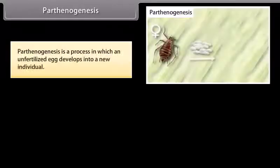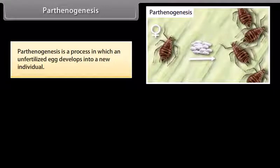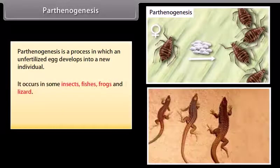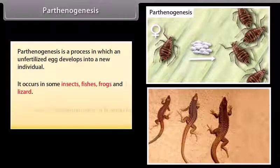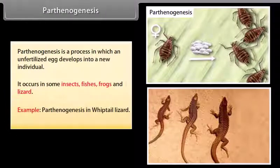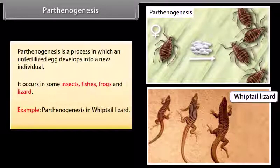Parthenogenesis is a process in which an unfertilized egg develops into a new individual. It occurs in some insects, fishes, frogs and lizards. Example: parthenogenesis in whiptail lizard.